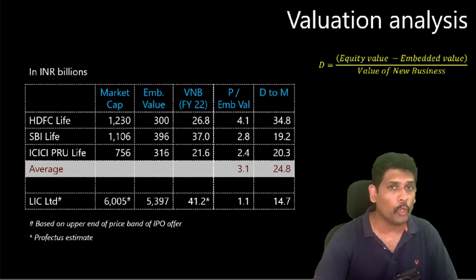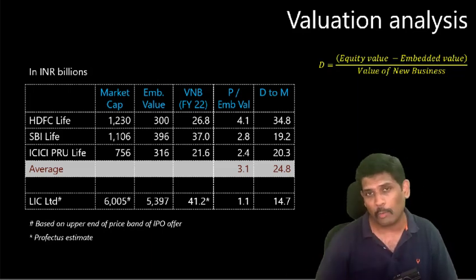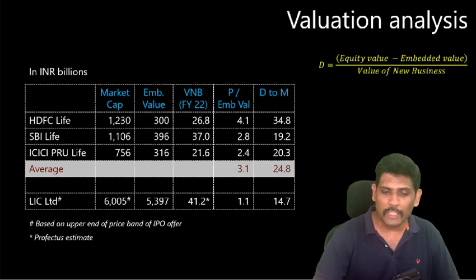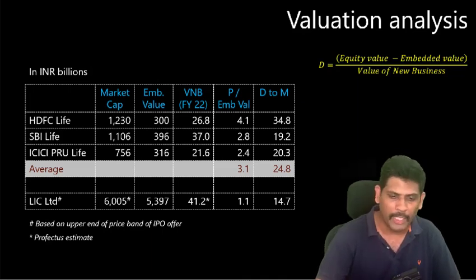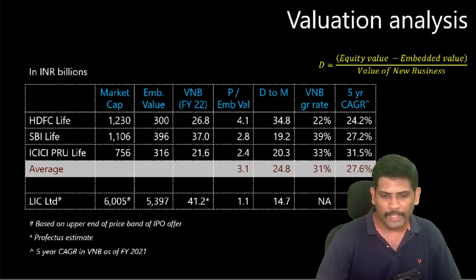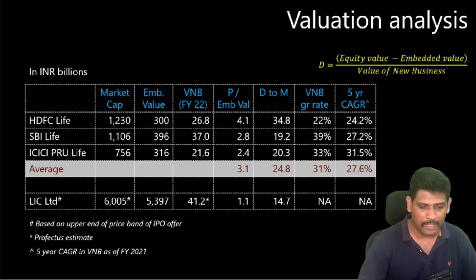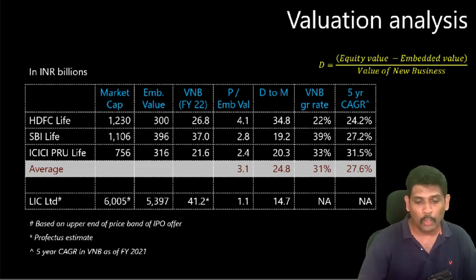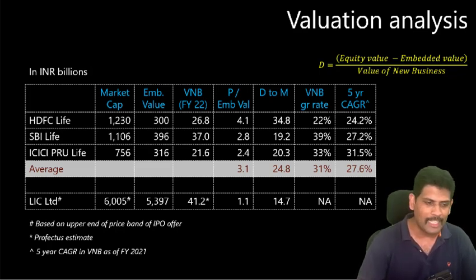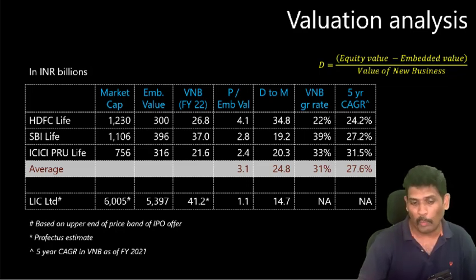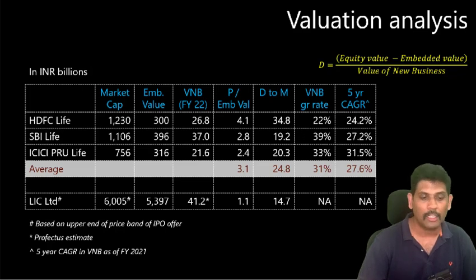Why do we have so much variation in the D2M metric? Because this is a no-growth model, but in reality VNB grows, and the market would obviously prefer to pay a higher amount for companies growing faster. Looking at VNB growth rates, one thing that is clear among the three listed companies is that HDFC Life does not rank very high — it has a very low growth rate compared to the other two players, both for last year and the five-year CAGR. And despite that, it has a very high D2M metric, which makes me conclude that HDFC Life is perhaps overvalued compared to other companies.